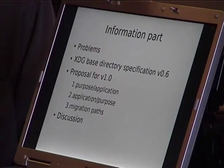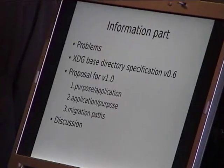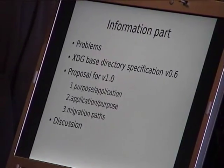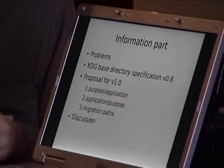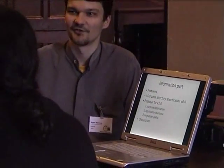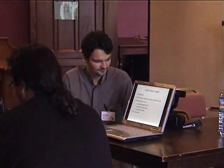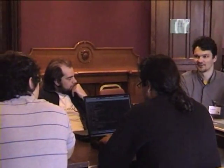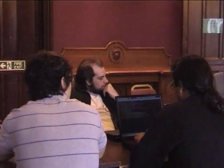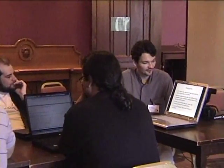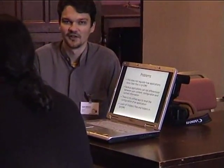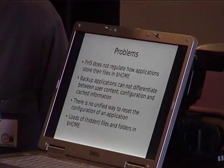I'll start with the problems and show you what the current specification is at freedesktop.org, the ideas gathered from people for the next version of this specification, and how to implement them. The initial problem is that the file system hierarchy standard does not regulate at all how applications handle the data inside the home directory. It's just not there.